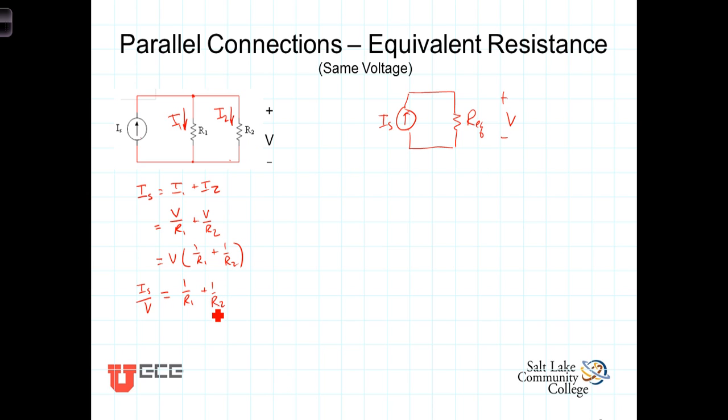Now let's do a similar analysis over here on the equivalent circuit. And here we're going to simply recognize that I sub s, the current flowing through here, is going to equal the voltage divided by that equivalent resistance, where I sub s equals V over R eq.